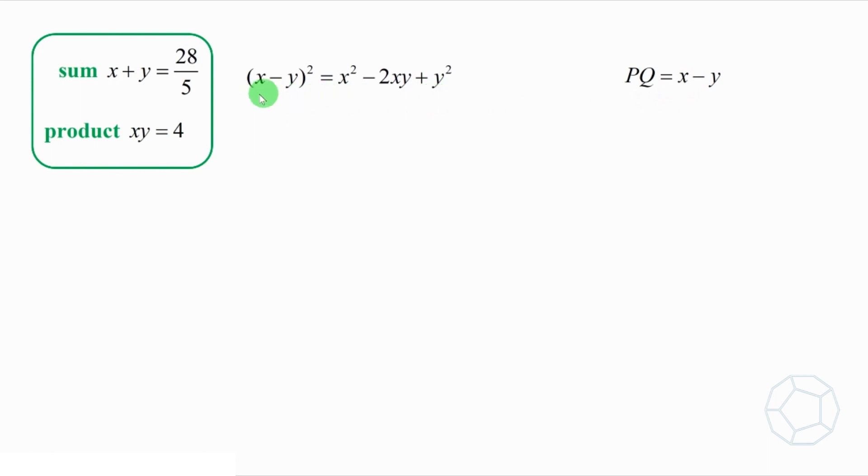Consider X minus Y whole squared, which is X squared minus 2XY plus Y squared. Let's add 4XY and subtract 4XY at the same time. So the first four terms become X squared plus 2XY plus Y squared. This is a perfect square, which is X plus Y whole squared.